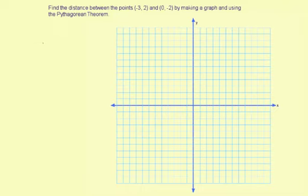Find the distance between the points negative 3, 2 and 0, negative 2 by making a graph and using the Pythagorean Theorem.